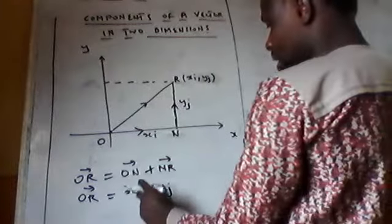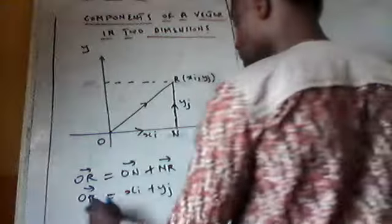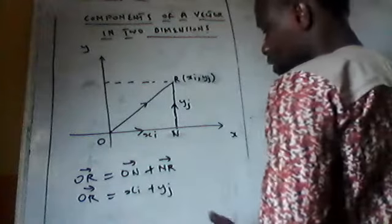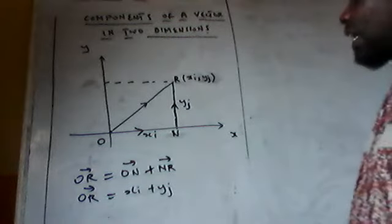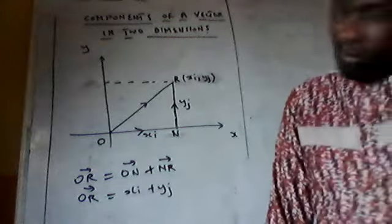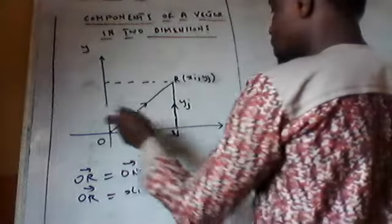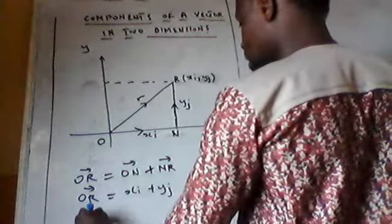Normally we use I and J to represent the unit vectors. So OR is equal to XI plus YJ. And since the journey from O to R is R, we can say R equals XI plus YJ. Try to note this down.